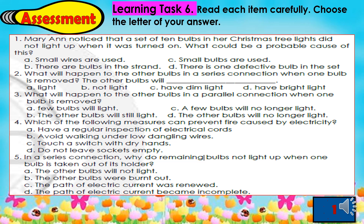Now let us answer learning task 6. Number 1: if your answer is letter D, 'there is one defective bulb in the set' — you are correct. Number 2: if your answer is letter B, 'not light' — you are correct. Number 3: if your answer is letter B, 'the other bulbs will still light' — you are correct. Number 4: if your answer is letter A, 'have a regular inspection of electrical cords' — you are correct. Number 5: if your answer is letter D, 'the path of electric current became incomplete' — you are correct.